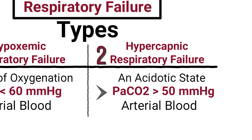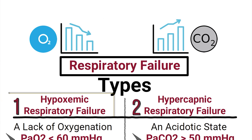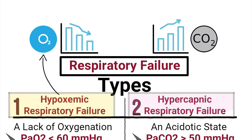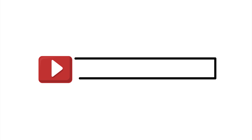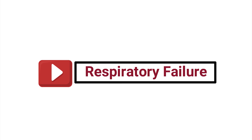Type 1 respiratory failure represents a lack of oxygen, while Type 2 represents ventilatory failure due to the accumulation of too much CO2 in the body. This video was intended to provide just a brief overview of the topic, which will be broken down in much more detail in a separate video.